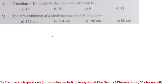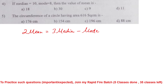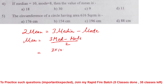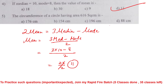If median is 10 and mode is 8, find the value of mean. Using the formula: 2 times mean equals 3 times median minus mode, so mean equals (3 × median − mode) / 2. That gives (3 × 10 − 8) / 2 = (30 − 8) / 2 = 22 / 2 = 11. Option D is the correct answer.